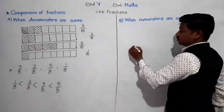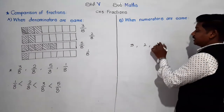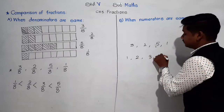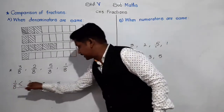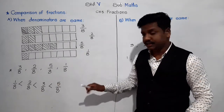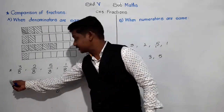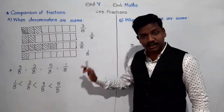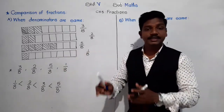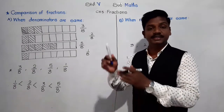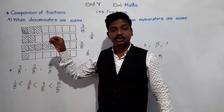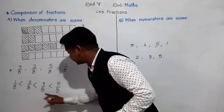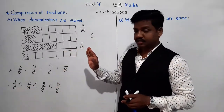If you take only the numerators 1, 2, 3, and 5 — among these, which is smallest? 1, then 2, then 3, and 5. That is how we arrange numbers, and only the numerators are arranged in that same way here. So when denominators are same, just arrange the numerators into ascending order and keep the denominator as it is — 8. Numerators arranged in ascending order.